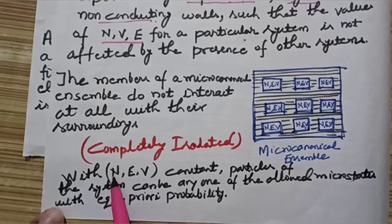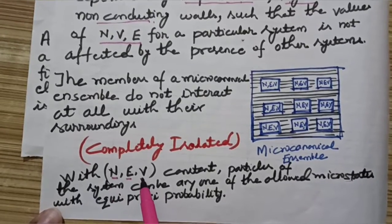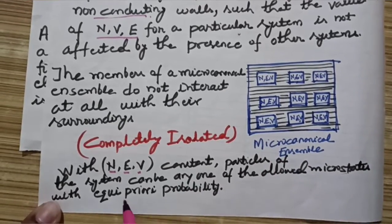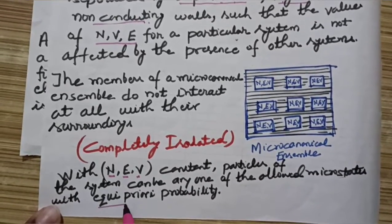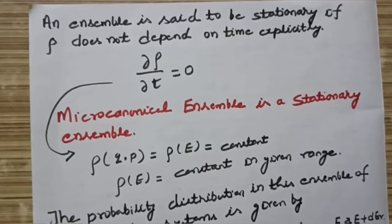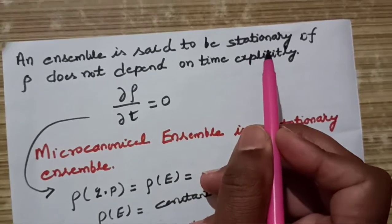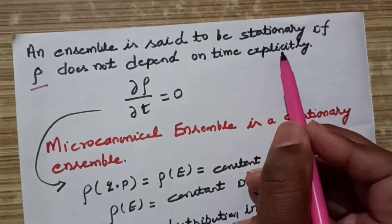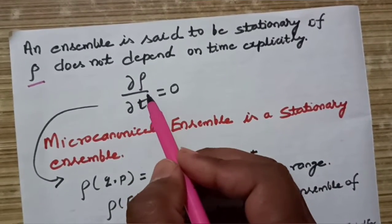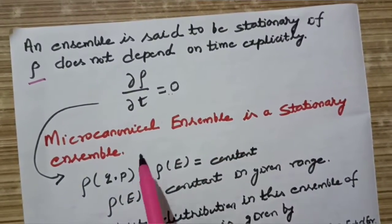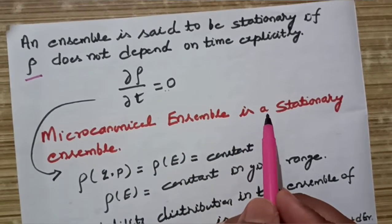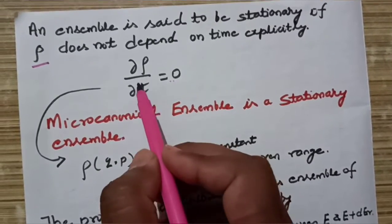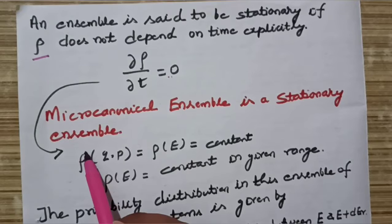Because the values of the number of particles and energy are constant, the particles of the system can be in any one of the allowed microstates due to equal a priori probability. An ensemble is said to be stationary if the density distribution function ρ does not depend on time explicitly, meaning ∂ρ/∂t = 0. That is why the micro canonical ensemble is a stationary ensemble.